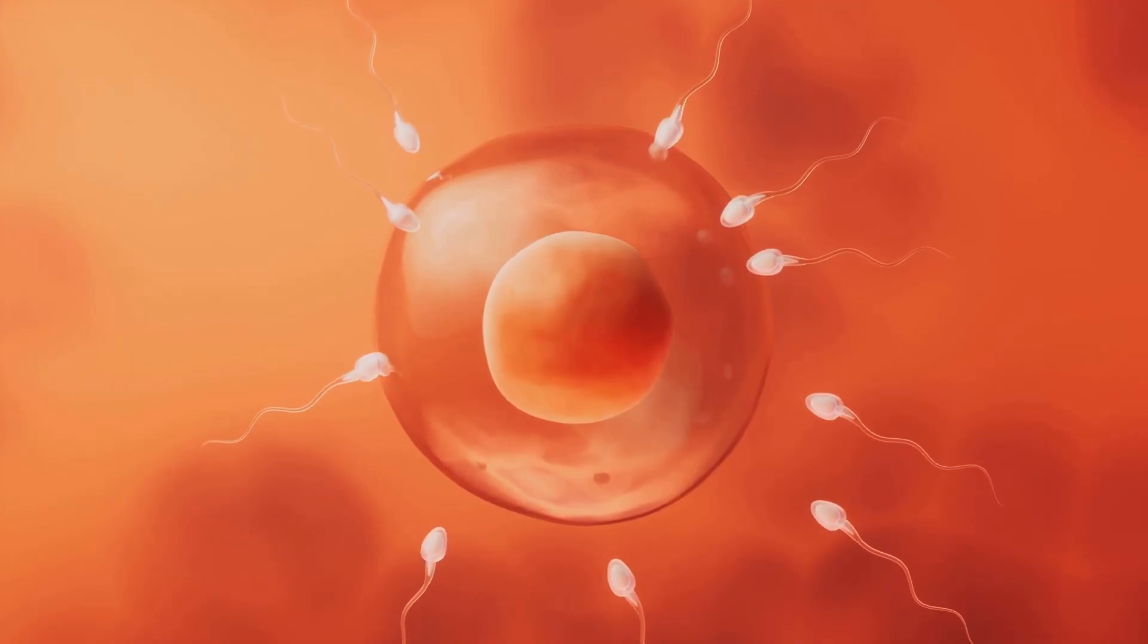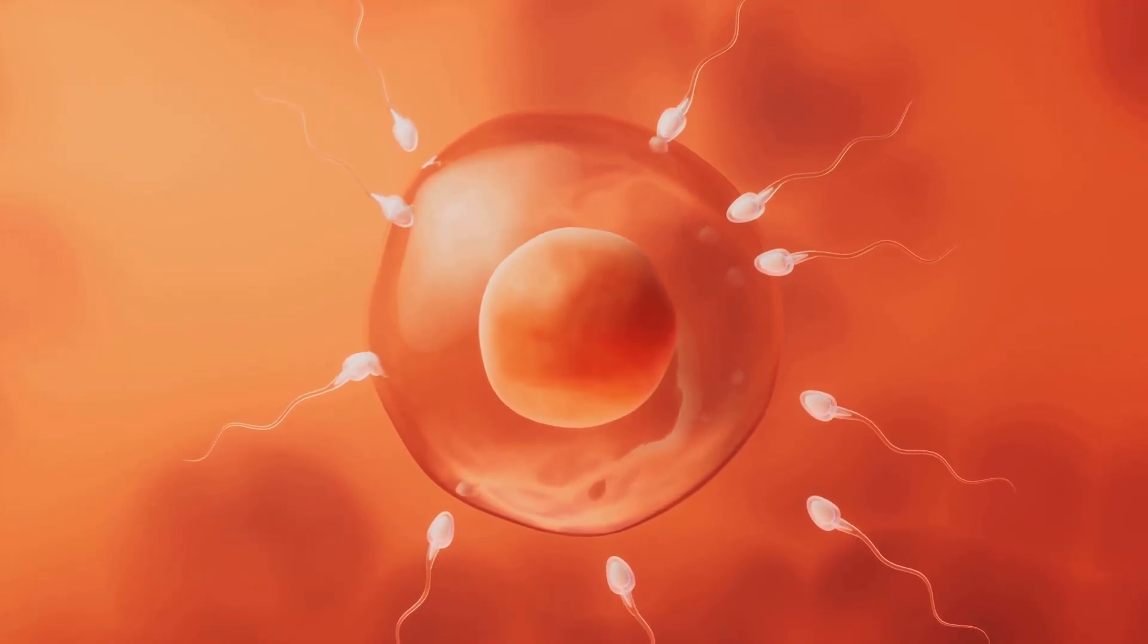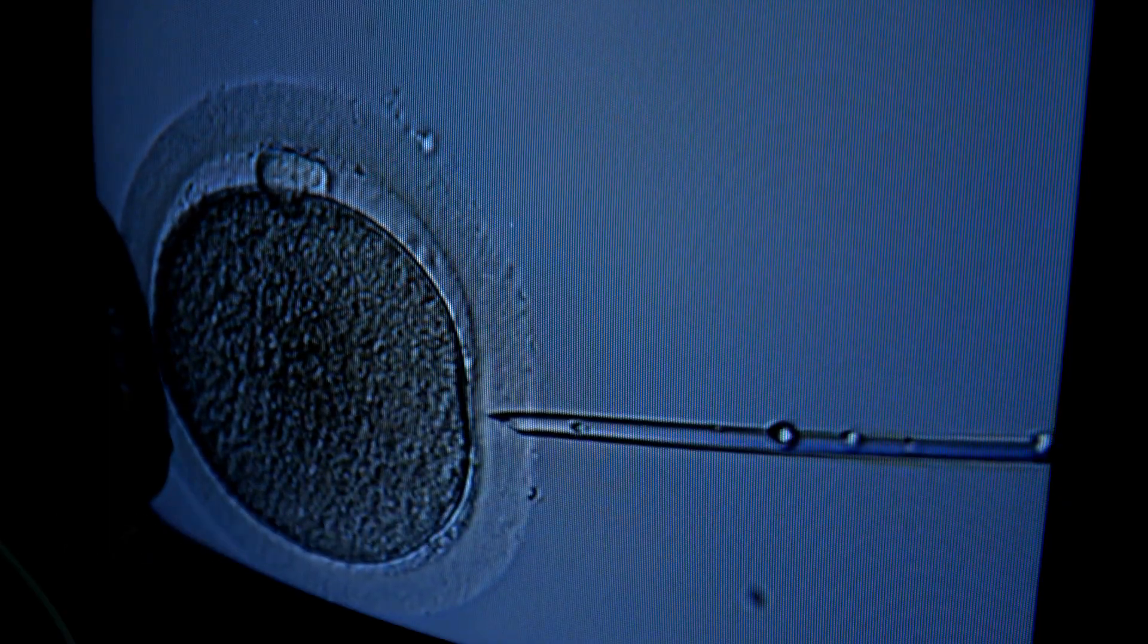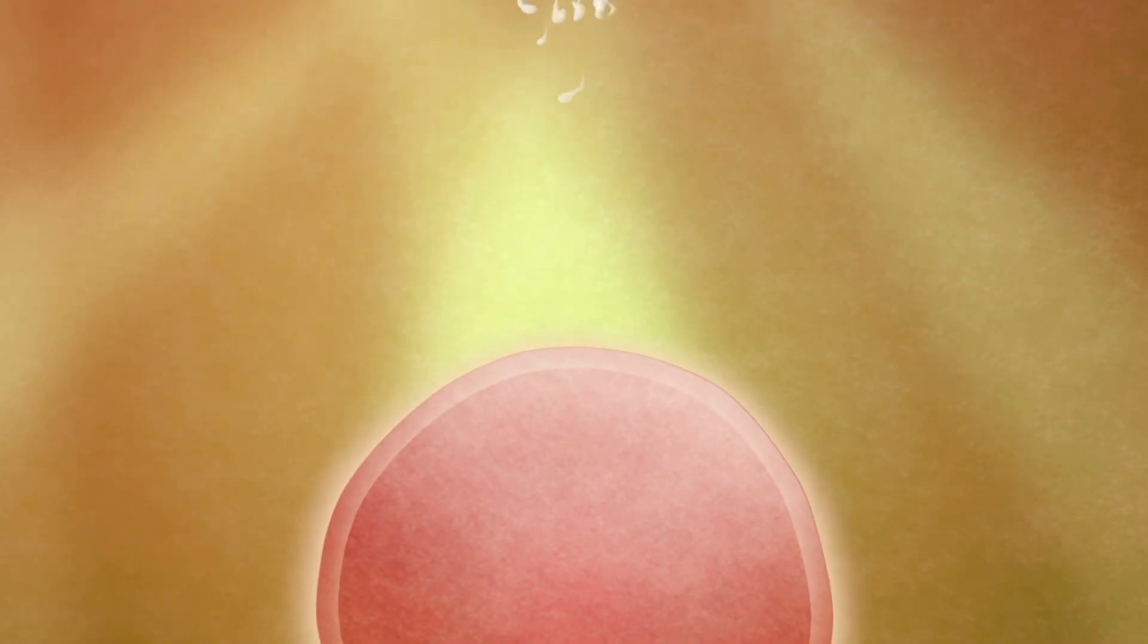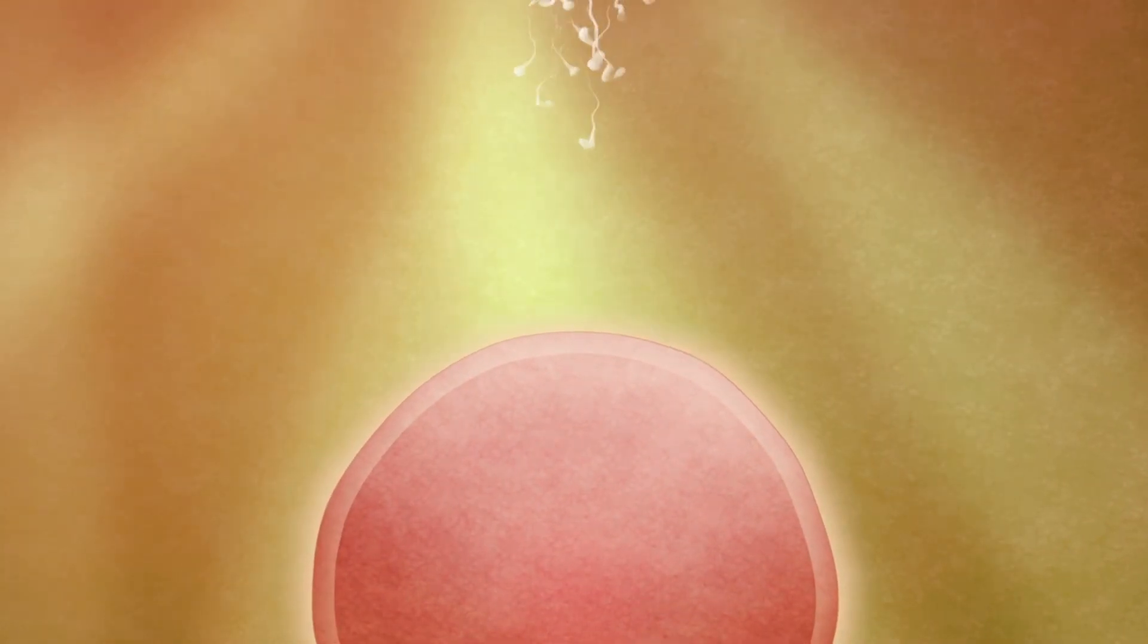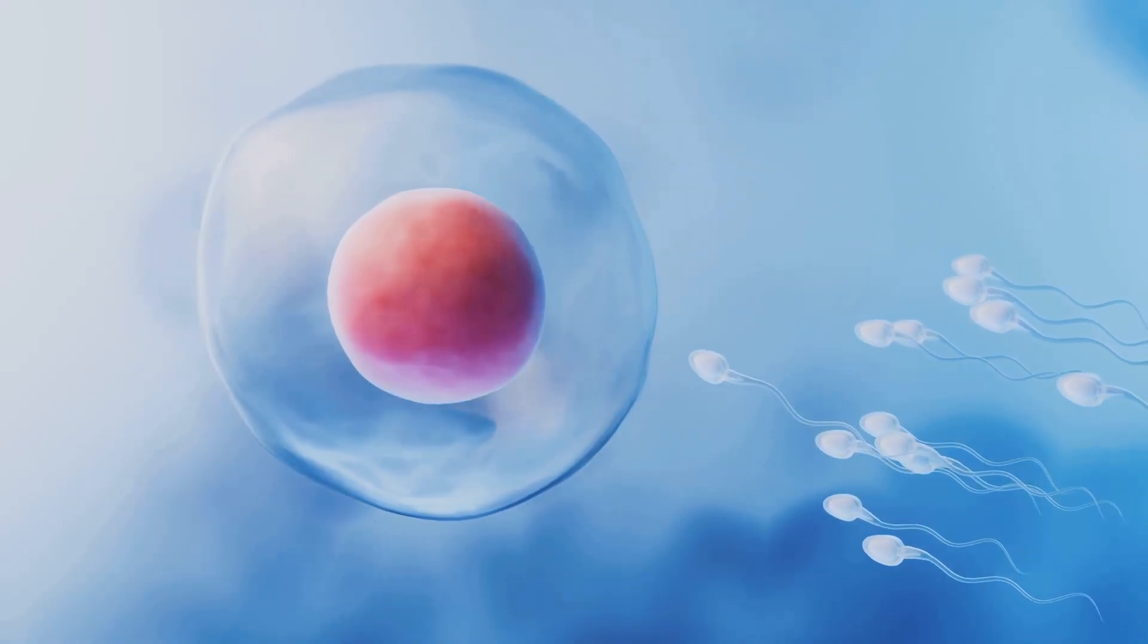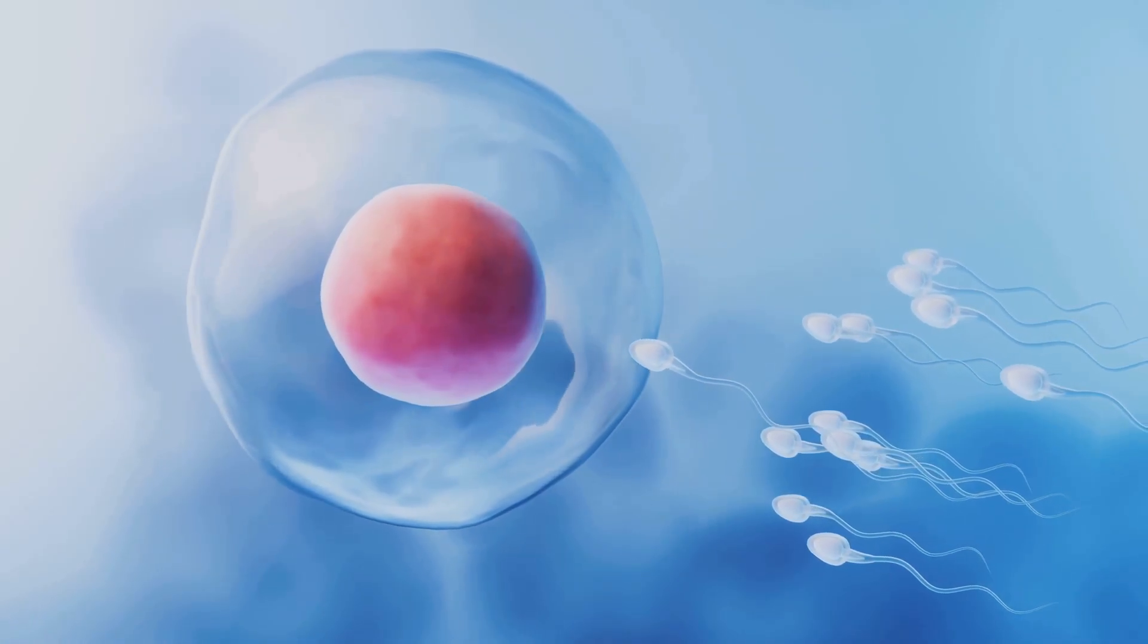When a sperm finally penetrates the egg's outer layer, something incredible happens: fertilization. The sperm's genetic material fuses with the egg's, creating a unique blueprint for a new human being. This single cell, called a zygote, is the very beginning of a new life.